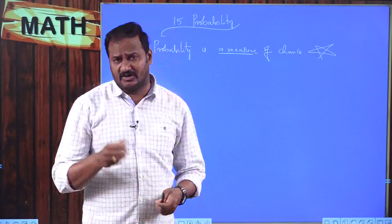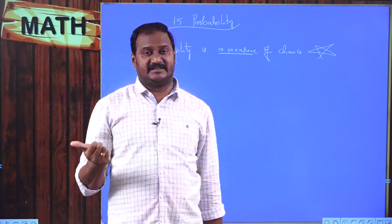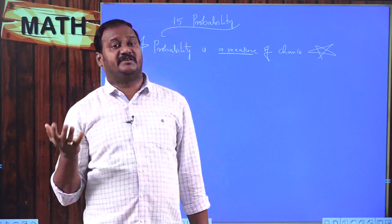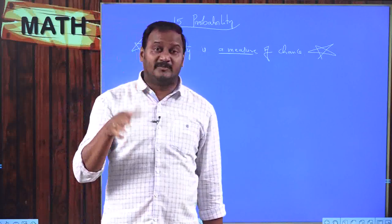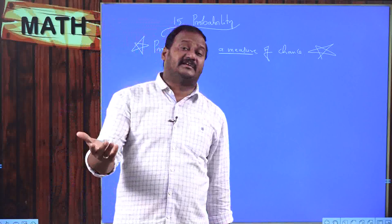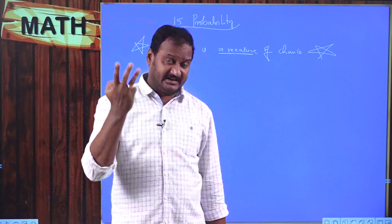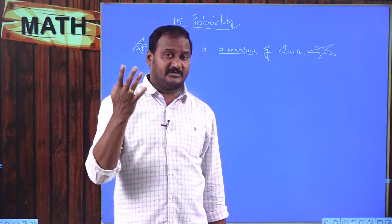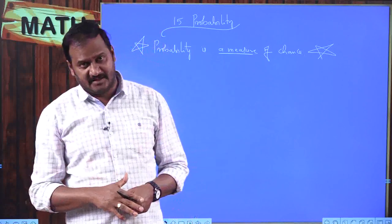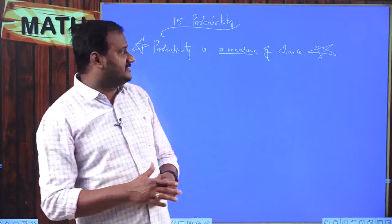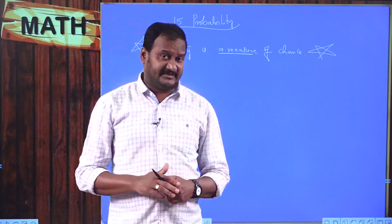For example, when you are rolling a die, it has 6 sides. When you have a 6-sided die and you are rolling it, what is the probability of occurring number 1 on the face, number 2, 3, 4, 5, 6? They are all equally likely outcomes.